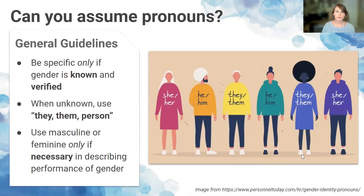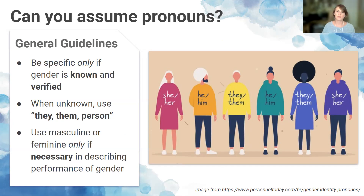On gender in alt text: no assumptions should be made about the gender of a person represented, although where gender is clearly performed or verifiable it should be described. When unknown, a person should be described using they/them or 'person,' with physicality expressed through descriptions of their features — which inadvertently tend to indicate masculine or feminine characteristics. The use of 'masculine' or 'feminine' are problematic and should be avoided unless necessary for describing the performance of a gender.